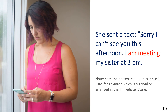The picture shows a woman sending a text message. The example reads: She sent a text — I can't see you this afternoon, I am meeting my sister at 3 pm. Note: here the Present Continuous tense is used for an event which is planned or arranged in the immediate future.